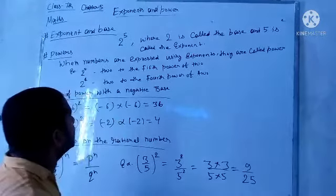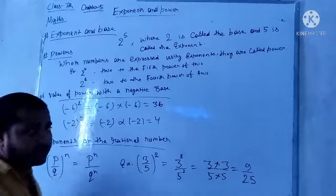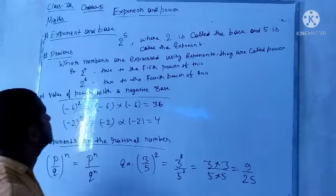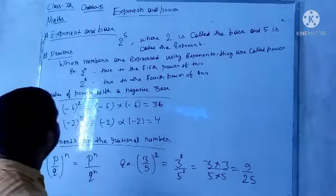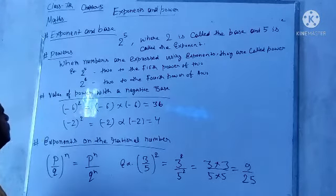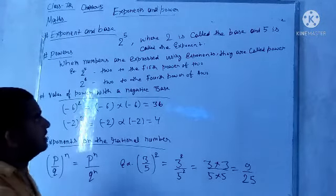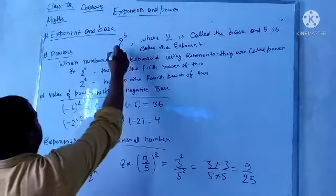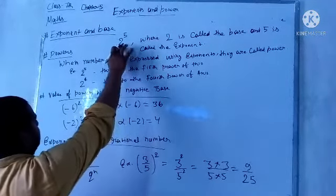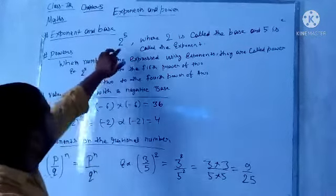Now, the next chapter is exponents and powers. Chapter 5 is class math. You can see exponents and base. So, what happens is 2 to the power of 5.